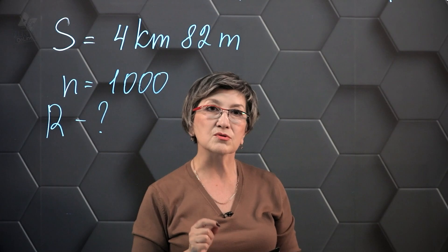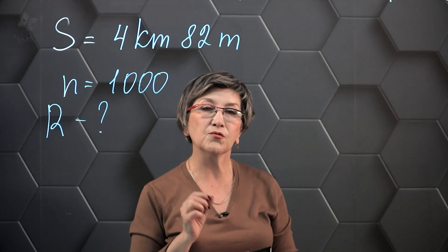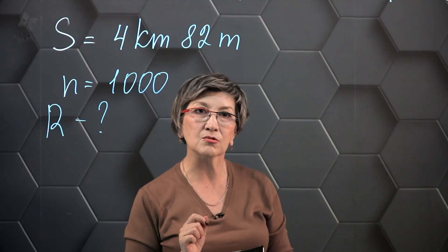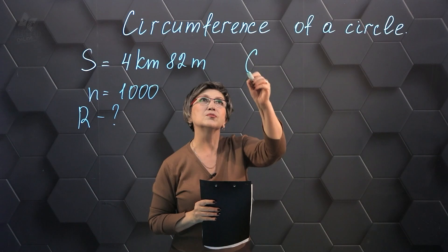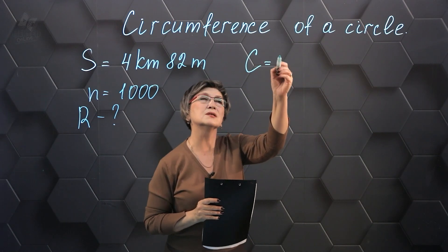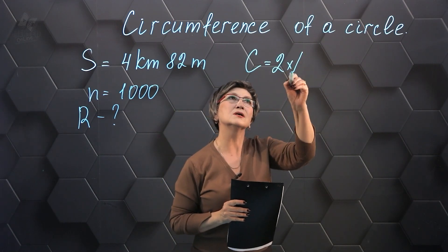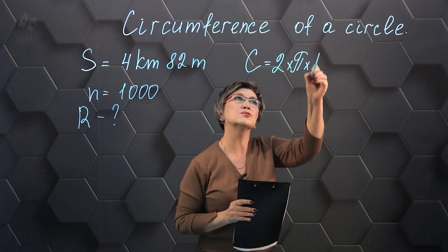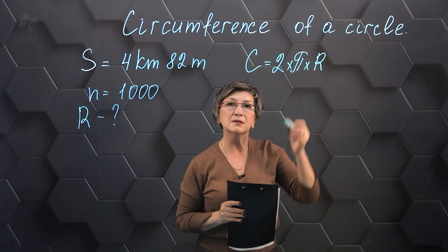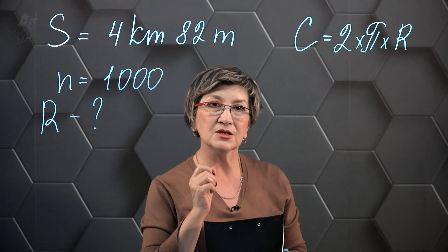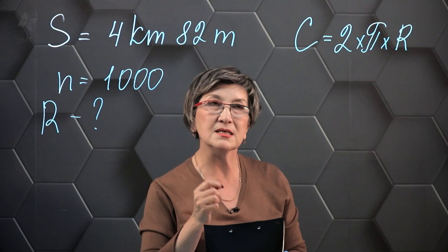In order to solve this problem we will use the formula for finding the length of the circle. To find the length of the circle we need to multiply 2 by the number π and multiply by R, the radius. But first we need to find the circumference of the circle.